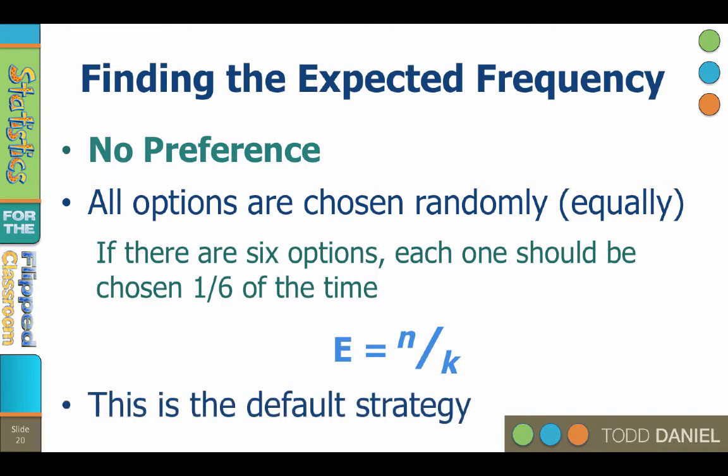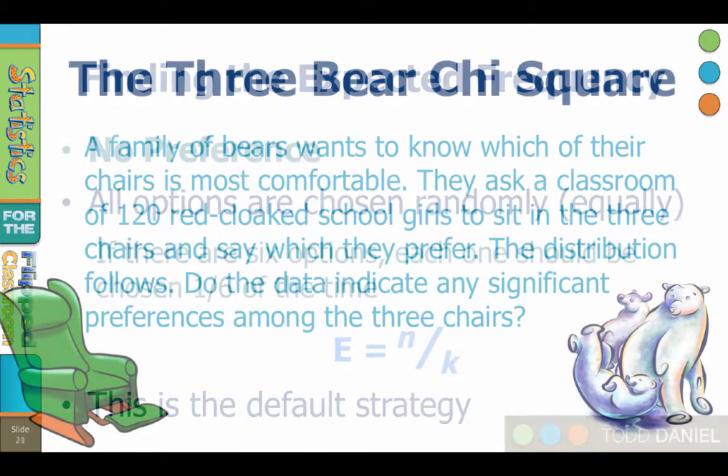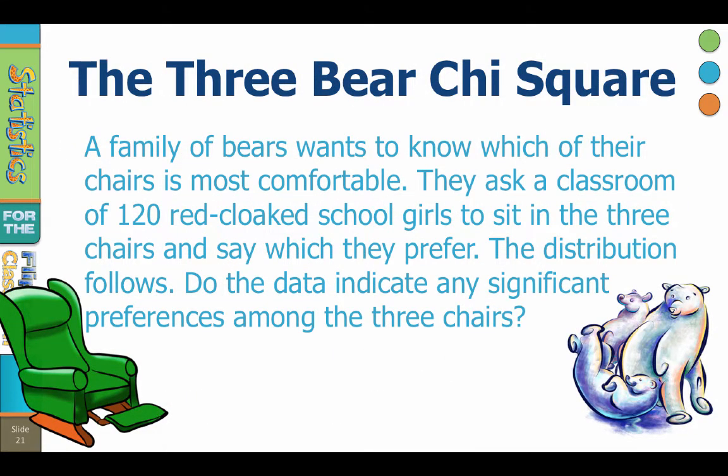If you're not sure but aren't given other information, use this strategy. In fact, let us apply this strategy with the three bear chi-square. A family of bears wants to know which of their chairs is most comfortable. They ask a classroom of 120 red-cloaked schoolgirls to sit in each of the three chairs and say which one they prefer.